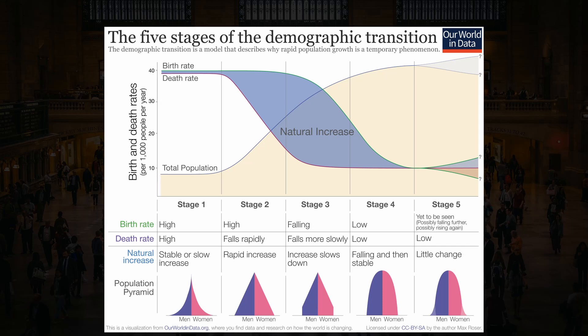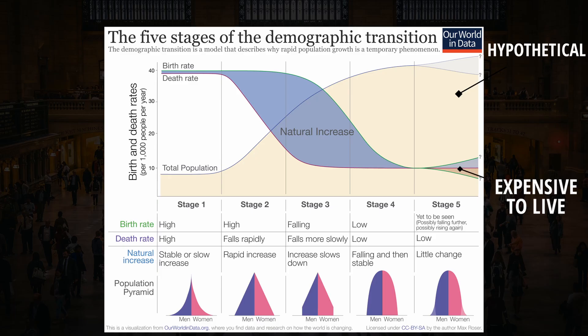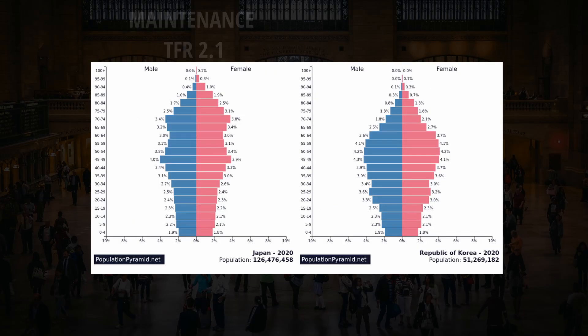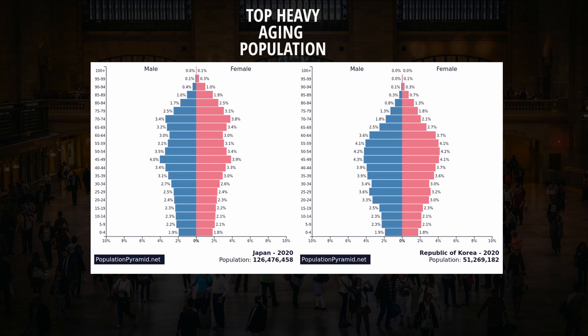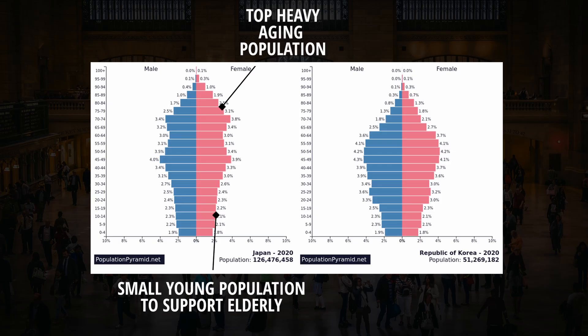Finally, there's the fifth stage — still hypothetical — but demographers say populations will decrease in this stage, as seen with Japan and South Korea, where the cost of living is so expensive that it's not fiscally reasonable to have more than one child. In order to maintain a population, a country must have a TFR of 2.1. When a country like Japan has a TFR of 1.36, their population will start decreasing. A contracting population pyramid like Japan's will run into problems in the future, as the older generation enters retirement and the smaller younger generation will have to support them, potentially leading to financial troubles for the entire country.